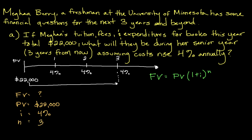We start by filling in all the information we have: $22,000 multiplied by the result of one plus i. Here's where people can get confused — in order for this equation to work, you have to convert the interest rate from a percentage to a decimal. By moving the decimal point over, we're going to have 0.04. Then we take that to the third power since that is the number of years. You can do this a few different ways — with a financial calculator like a BA II Plus, which is the Texas Instruments one I primarily use, or by hand.